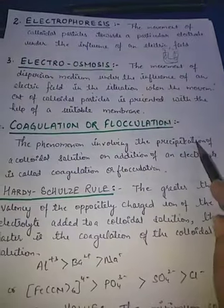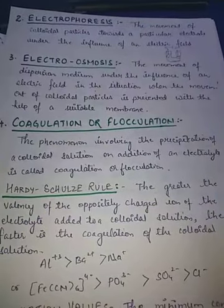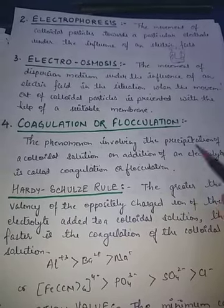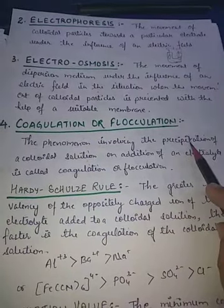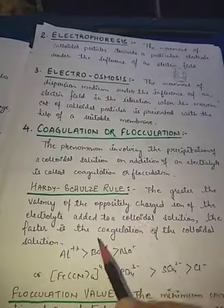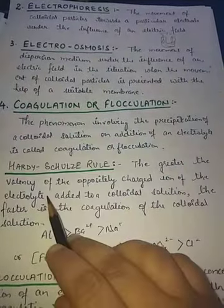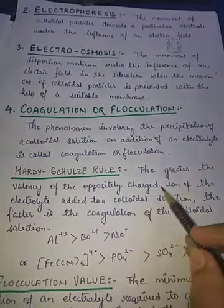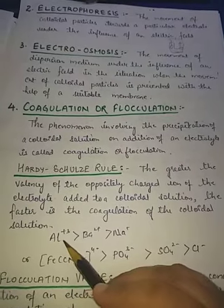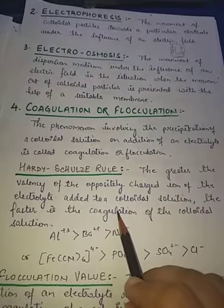Coagulation means precipitation. It is the phenomenon involving the precipitation of a colloidal solution on addition of an electrolyte, and is called coagulation or flocculation. Hardy and Schultz studied this and identified that the greater the valency of the oppositely charged ion of the electrolyte added to a colloidal solution, the faster is the coagulation of the colloidal solution. The more the valency, the more the flocculation or coagulation power.